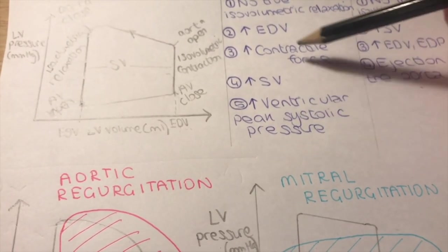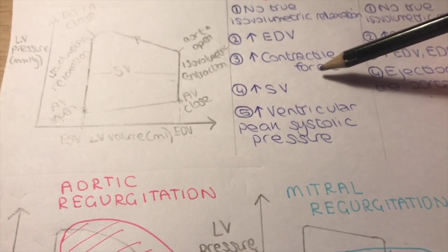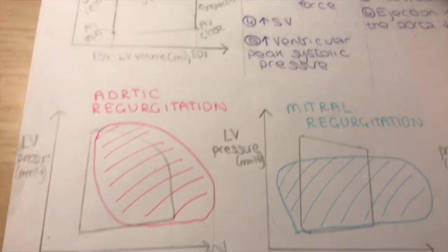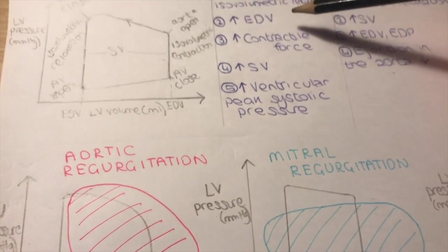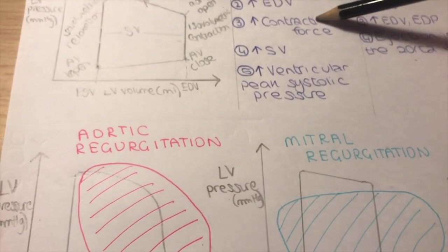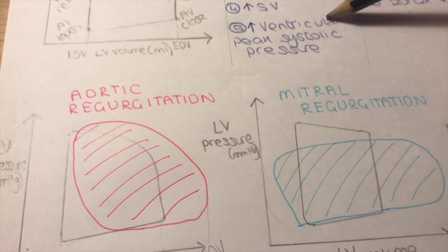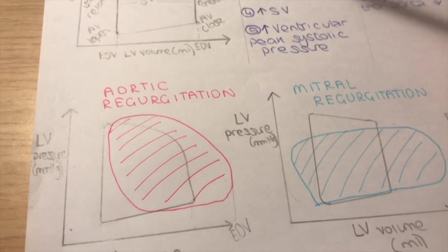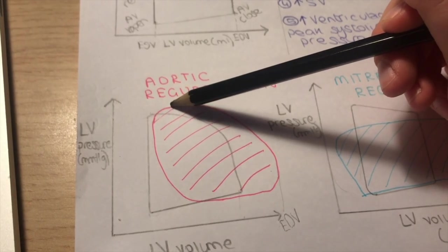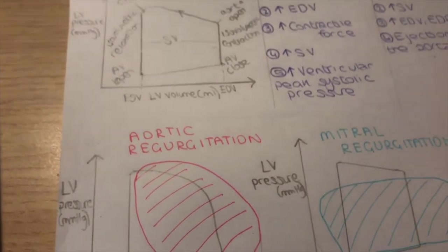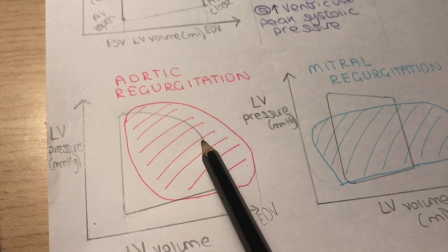All of these are a result of the Frank-Starling mechanism. When you get an increase in end diastolic volume, this results in an increased contractile force, an increased stroke volume, and an increased ventricular peak systolic pressure. The peak systolic pressure will be higher, and the stroke volume will be larger than normal.